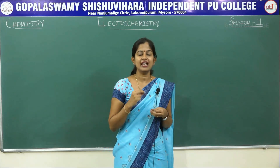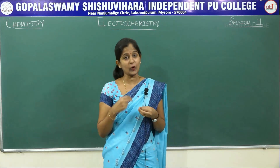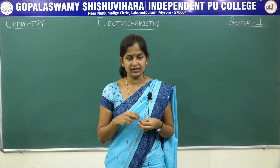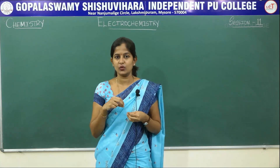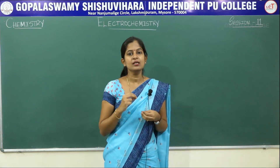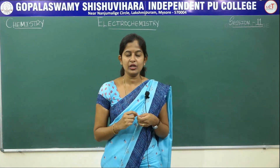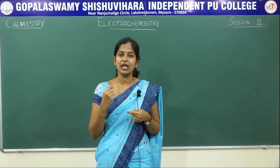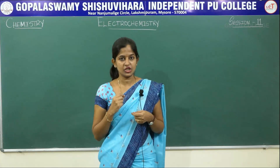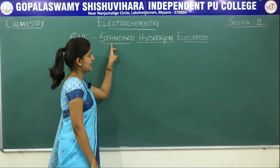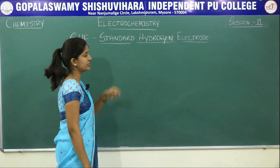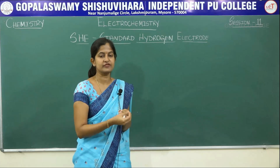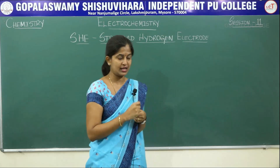In order to find out an unknown electrode potential, you have to use a standard electrode. The standard electrode we are using today is SHE. SHE is nothing but your Standard Hydrogen Electrode. The Standard Hydrogen Electrode helps in finding out the electrode potential of an unknown electrode. Standard, which means that you will be referring the electrode potential of all other electrodes with respect to SHE, that is the Standard Hydrogen Electrode.